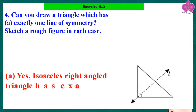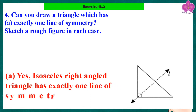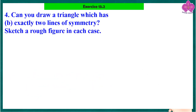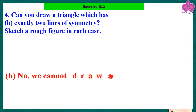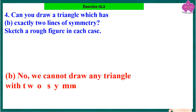Question 4: Can you draw a triangle that has exactly one line of symmetry? Yes — an isosceles right-angle triangle has exactly one line of symmetry. Can you draw a triangle that has exactly two lines of symmetry? No, we cannot draw any triangle with exactly two lines of symmetry.